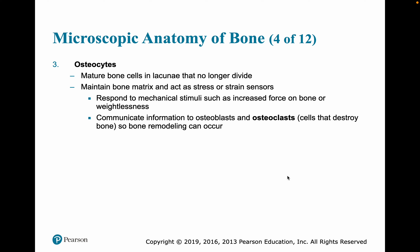When osteoblasts mature, they become osteocytes anchored in the lacunae and no longer divide. They still work to maintain matrix and act as stress or strain sensors, responding to mechanical stimuli such as increased force or weightlessness, communicating information to osteoblasts and osteoclasts. Osteoclasts destroy bone — this will be part of a process known as bone remodeling, discussed at the end of this chapter.